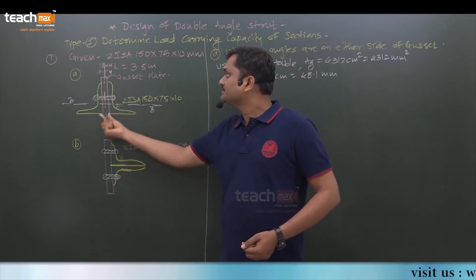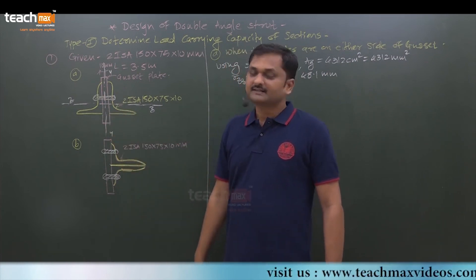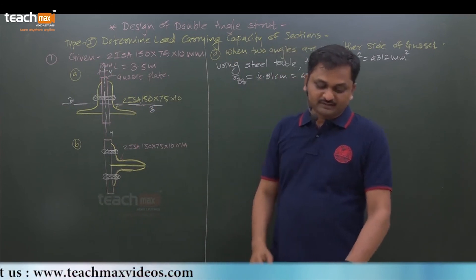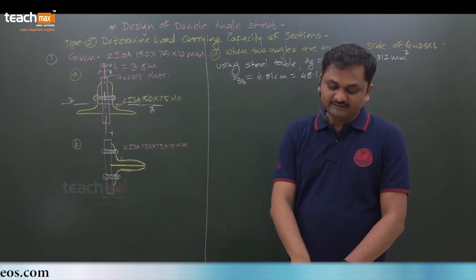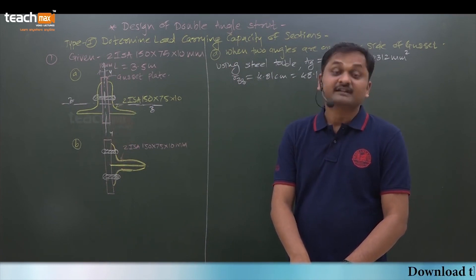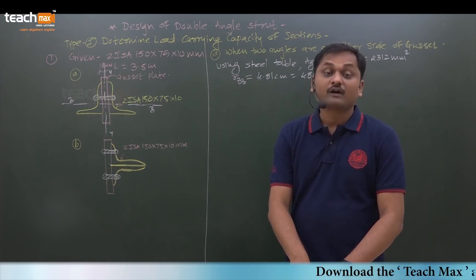And if you observe, gap is 10 mm, which means you have to pick the property from steel table. Here it is specially mentioned on page number 41: radius of gyration about yy axis in centimeter, distance back to back of angles.